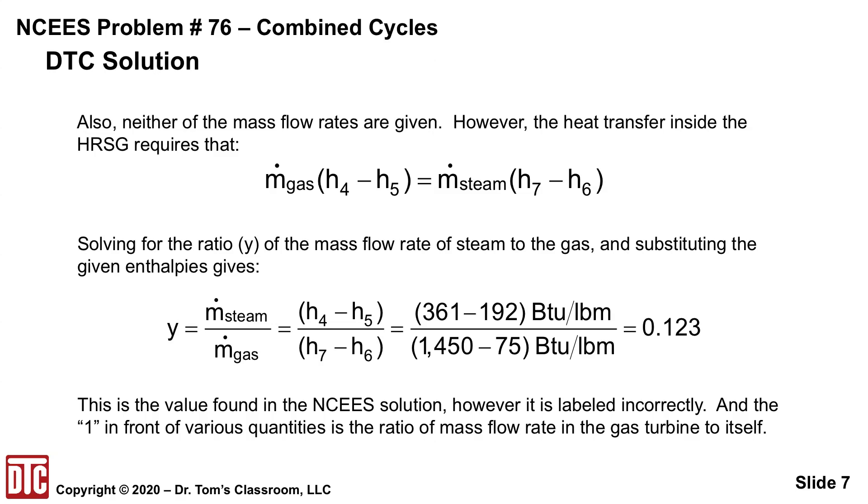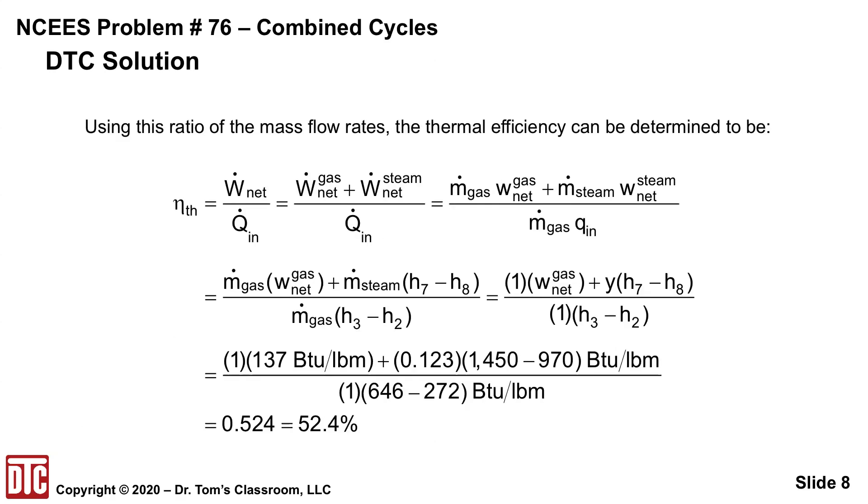So now if we put this in the proper equation, you have the one times the net on the gas turbine, 137, then the 0.123 times the net work of the turbine from the steam power plant, the difference in its enthalpies, 1450 minus 970, and then divided by, and I have the one there again representing the M dot gas divided by M dot gas.